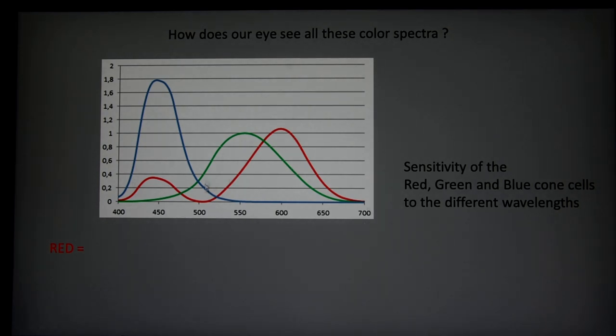So first, how does our eye see these colors? We have three different kinds of cone cells in our retina: blue, green and red sensitive. Actually one cone by itself doesn't see much difference between all the different lights. It has a sensitivity which depends on the wavelength.